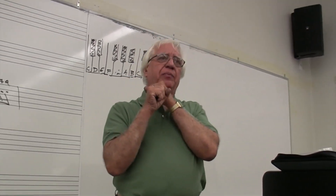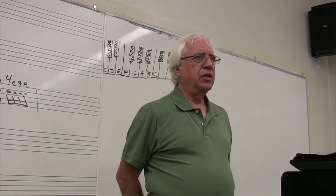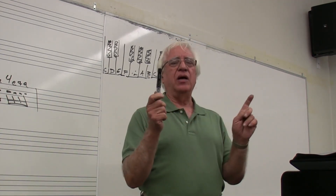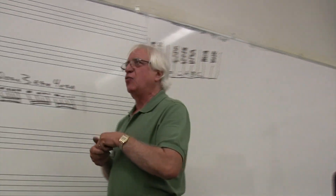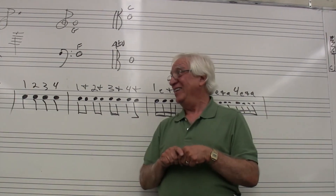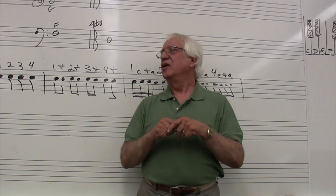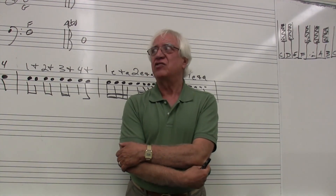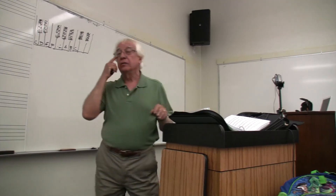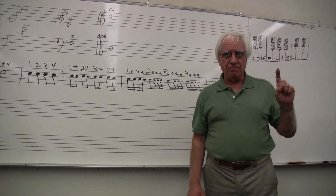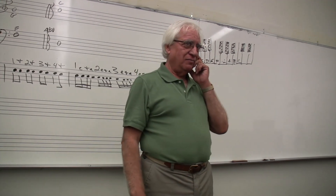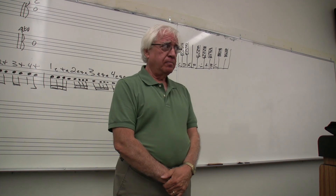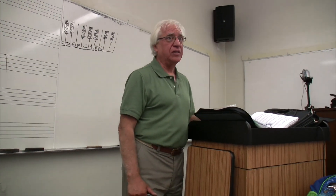Tell me a diatonic half step above C sharp. Let me re-ask it — I'll ask another question first to help some of you. What is the enharmonic equivalent of C sharp? D flat. The enharmonic of C sharp is D flat. Now, give me a diatonic half step above C sharp. D. Give me a chromatic half step above C sharp. C double sharp. A flat lowers the note by one half step, a double flat by two half steps. A sharp raises the note by one half step, and a double sharp raises the note by two half steps. A chromatic half step has the same letter name; a diatonic half step has a different letter name.